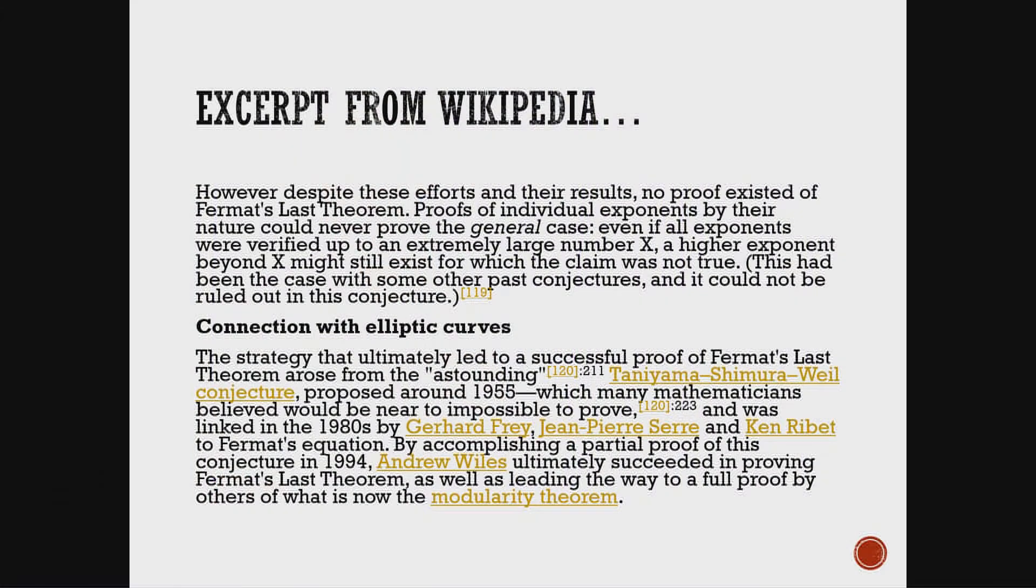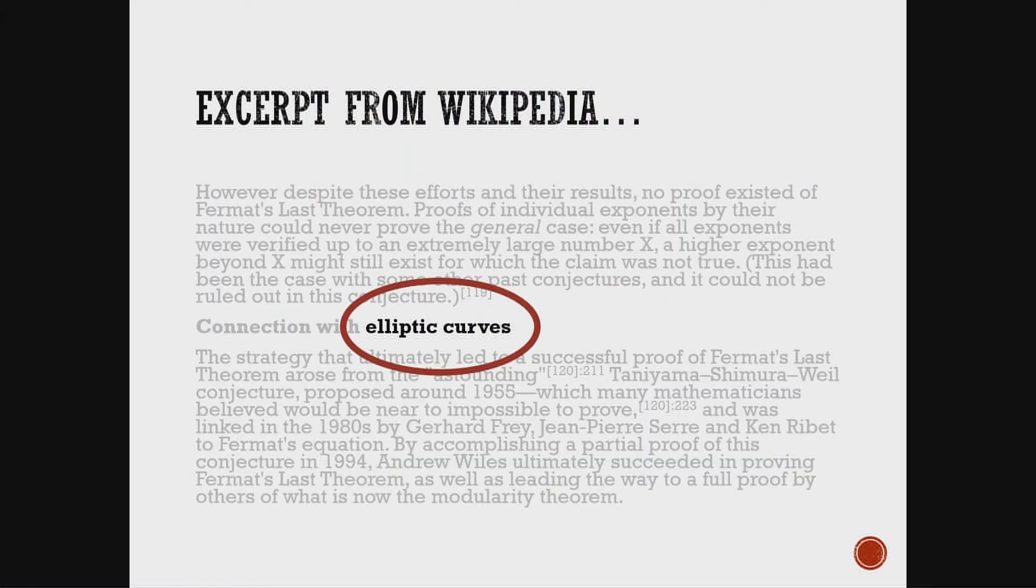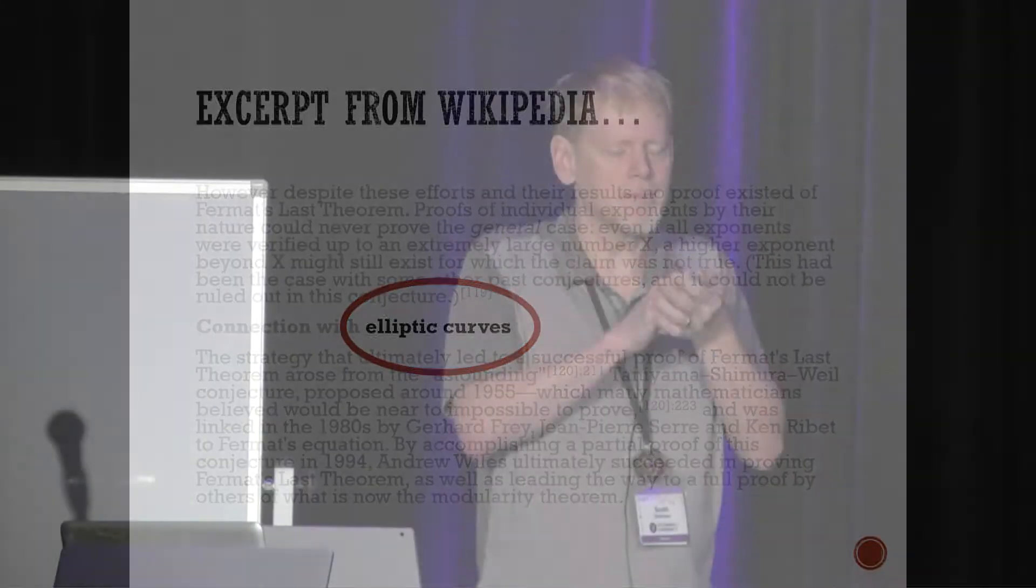But I'm here to tell you, Andrew Wiles was wrong. My first suspicion was when I was looking at a description of his proof, and I saw it mentioned something about elliptic curves, and I looked through his whole paper, and I didn't see a single picture of an ellipse. So I started pouring through his whole paper, trying to look for what was wrong. Yeah, okay, I didn't even understand the first page. But I figured the simplest way to disprove something is to just come up with a counterexample. How hard could that be?